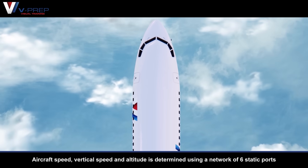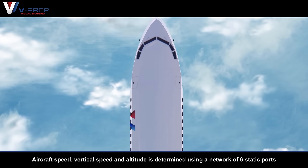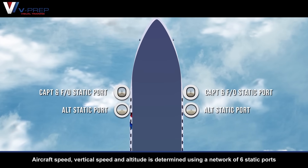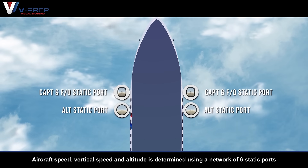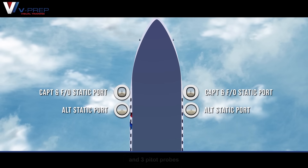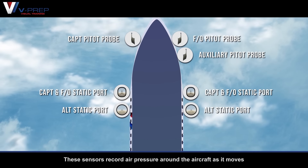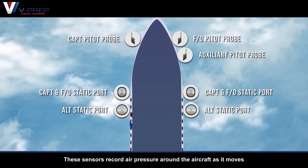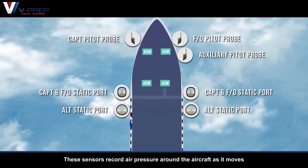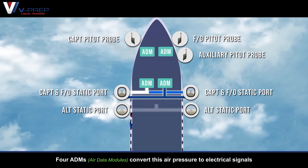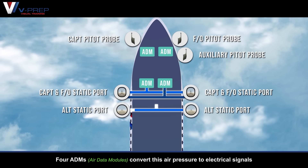Aircraft speed, vertical speed and altitude is determined using a network of six static ports and three pitot probes. These sensors record air pressure around the aircraft as it moves. Four ADMs convert this air pressure to electrical signals.